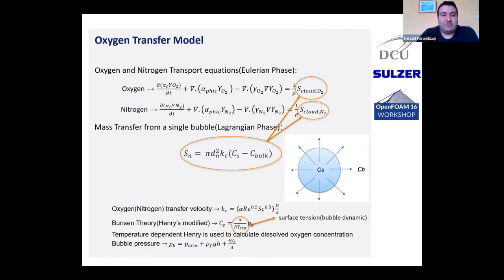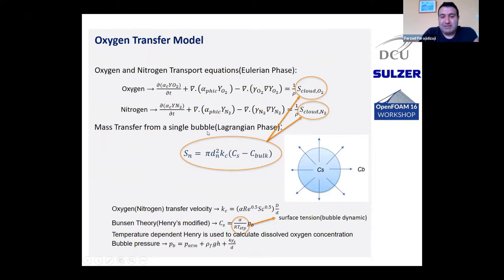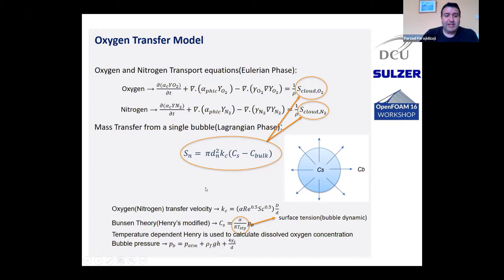We have added to MPPIC an oxygen transfer model. Since we are dealing with finite bubbles, they have a finite amount of oxygen and nitrogen inside, so we need both oxygen mass transfer and nitrogen mass transfer in the Eulerian phase. The mass transfer from a single bubble in the Lagrangian phase is extracted and accumulated, then transferred as source terms into the Eulerian phase. The schematic shows the oxygen transfer from a single bubble.